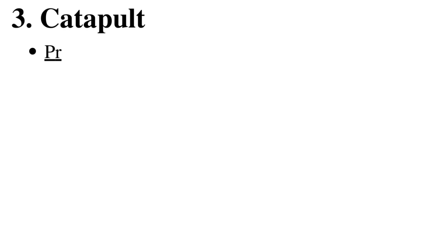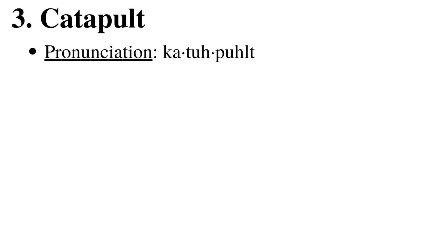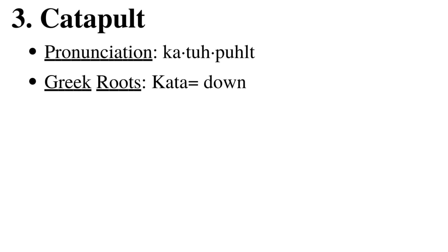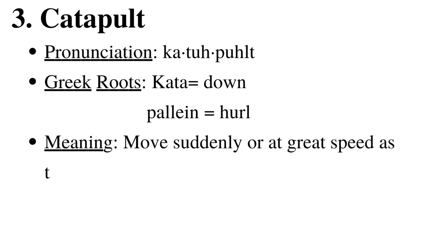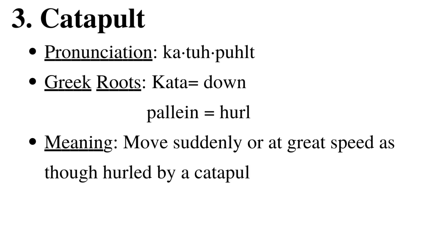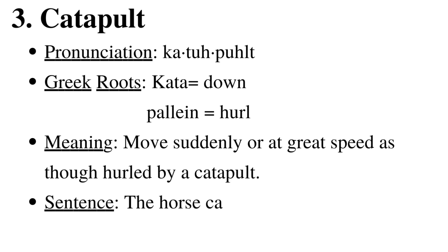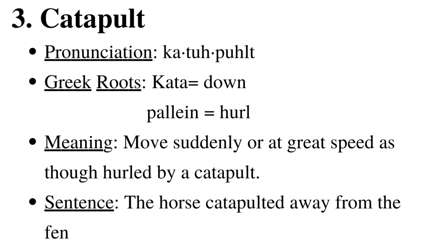3. Catapult. Catapult has been derived from Greek words 'kata' which means 'down' and 'pallian' which means 'hurl'. Catapult means move suddenly or at great speed as though hurled by a catapult. For example, the horse catapulted away from the fence.